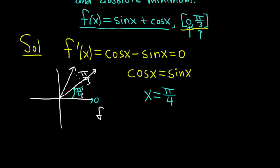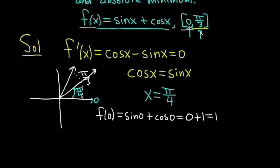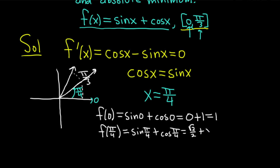Let's start with 0. f of 0 equals sine of 0 plus cosine of 0. The sine of 0 is 0 and the cosine of 0 is 1, so you get 0 plus 1, which equals 1. Now f of pi over 4 equals sine of pi over 4 plus cosine of pi over 4, which equals square root of 2 over 2 plus square root of 2 over 2. That gives 2 times square root of 2 over 2 — the 2's cancel — so you get square root of 2.